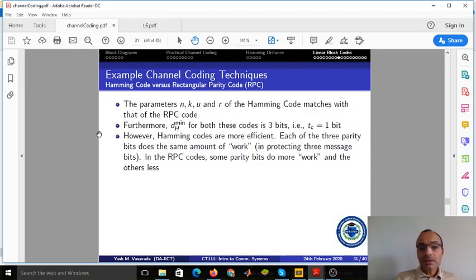Although we have not verified this or we have not evaluated it, what I can tell you is that the minimum Hamming distance for both of these codes is also the same—it is three bits, which means that tc is equal to one bit for both the Hamming code and the RPC code.